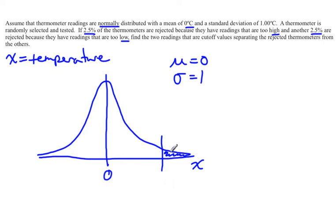We also have 2.5% that are too low, which would be down here below the mean. These are my x values - I'll call the lower one X1 and the upper one X2, just to give them names.